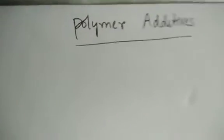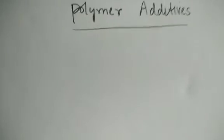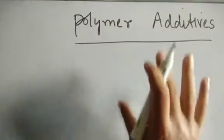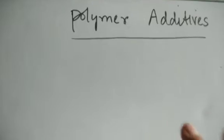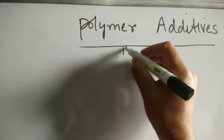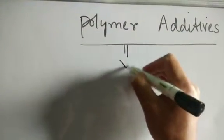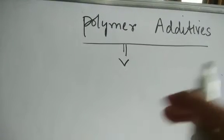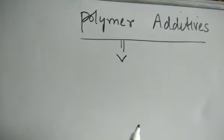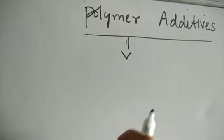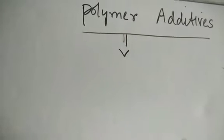Bismillahirrahmanirrahim. Today our topic is polymer additives. This is an important topic and we will go through it in a concise manner. Polymer additives are basically substances which we add to polymers so as to improve their certain properties.